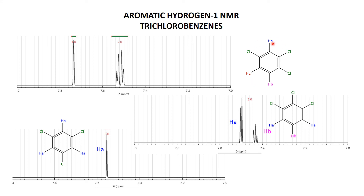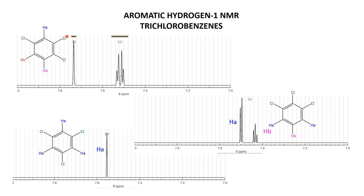So we've got three types of proton, three signals. HA we expect to be a singlet and the most downfield, stuck between two chlorines — and indeed, that one-hydrogen singlet is HA. Then Hb and Hc we'd expect to be a couple of doublets. There are two doublets that we can't fully resolve, but they're there. I'd anticipate that Hb, adjacent to two chlorines, is a little bit further downfield than Hc, but I wouldn't go to war over it.